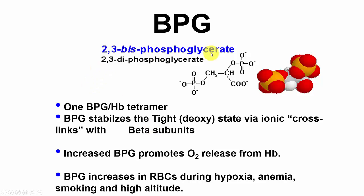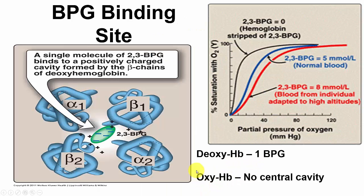BPG is 2,3-bisphosphoglycerate, also called 2,3-diphosphoglycerate — usually referred to as BPG now rather than DPG. It stabilizes the tight or deoxy form via ionic crosslinks with the beta subunits. Increased BPG promotes O2 release from hemoglobin. BPG increases in red blood cells during hypoxia, anemia, smoking, and at high altitude — people living at high altitudes have higher levels of BPG. You can see the two beta subunits have positive charge, and BPG has a negative charge that binds right in that cavity between the two beta subunits.